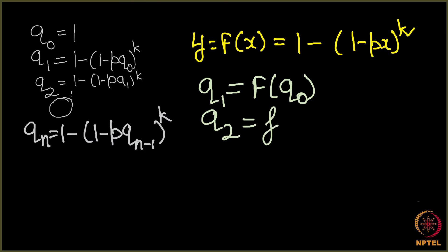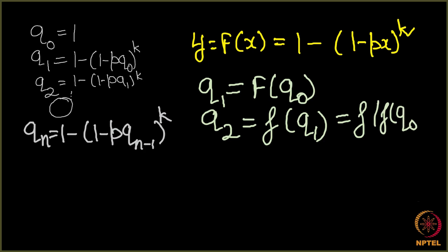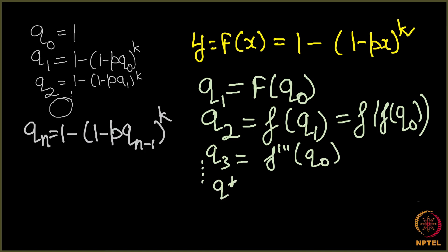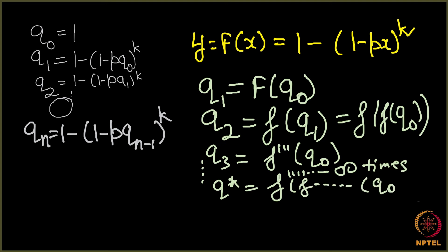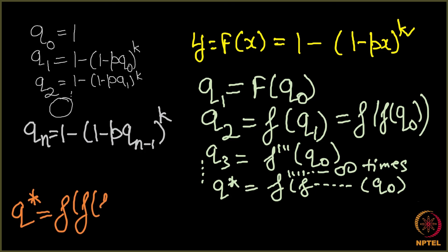Then q2 = f(q1) = 1 - (1 - p·q1)^k, which equals f(f(q0)). Similarly, q3 = f(f(f(q0))). So q* is f applied infinitely many times to q0, and since q0 = 1, we have q* = f(f(f(...(1)...))) with f applied infinitely.